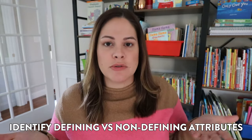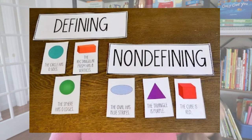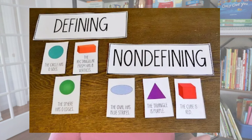Activity number three is to have students identify defining versus non-defining attributes. Once you've made the anchor chart, students can reference it. You want to make sure you introduce non-defining attributes as well. I like to do this with a simple sort — two headers: defining and non-defining. I explain that a defining attribute is something that makes it that shape; for example, a circle must have zero sides and a sphere must have zero edges. Non-defining attributes include color, size, orientation, and whether it has stripes or polka dots — things that don't change what shape it is.